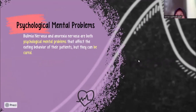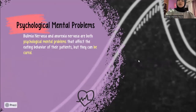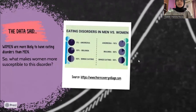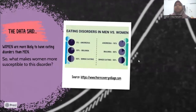To start this discussion, we should know that bulimia nervosa and anorexia nervosa are both psychological mental problems that affect the eating behavior of their patients, but they can be cured. First, you have to go to the doctor to confirm this disorder, and then the doctor will give you the best way to treat it. Looking at the data, women are more likely to have an eating disorder than men, with percentages of 19% for anorexia nervosa, 60% for bulimia nervosa, and the balance for binge eating. So what makes women more susceptible to this disorder? For more information, we will go into the main points.